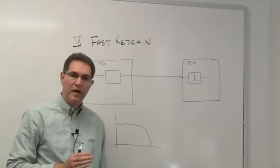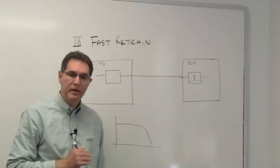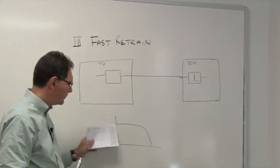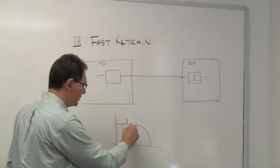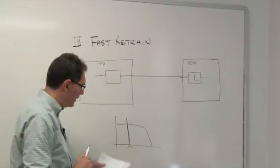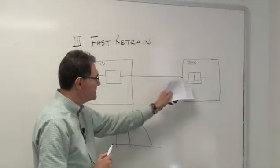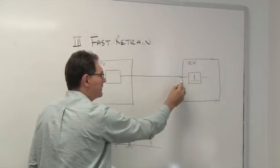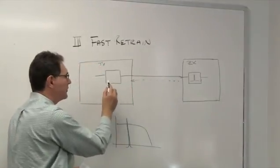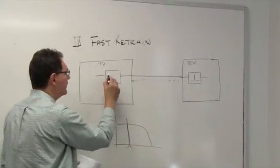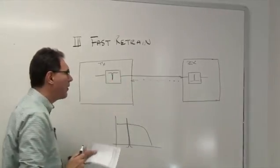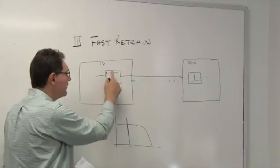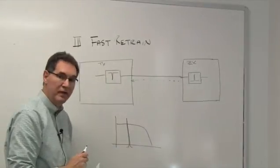So the next category of EMI mitigation techniques is transmitter based and it is called fast retrain type mitigation. Now that one works a little bit different. Once again, we'll start with a spectrum of data that gets interfered by a narrow band EMI emitter. Now the way this works is that the receiver senses that this interference has taken place. And what it does is that it sends information about the nature of that interference back to the transmitter.